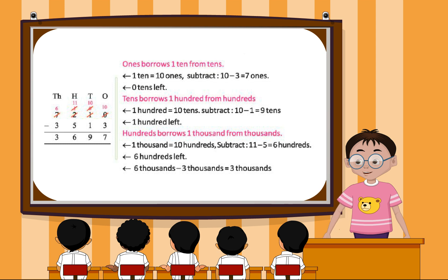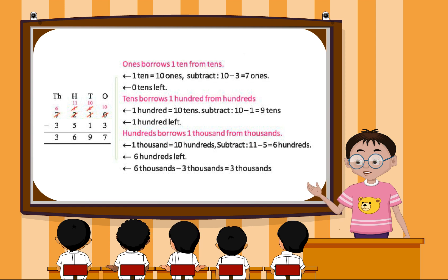Tens borrows one hundred from hundreds. One hundred equals ten tens. Subtract. Ten minus one equals nine tens. One hundred left.